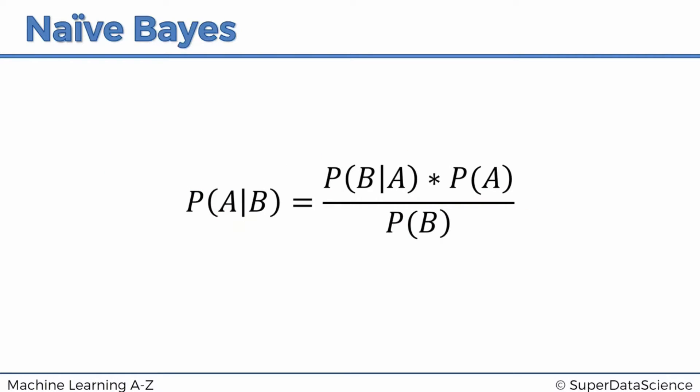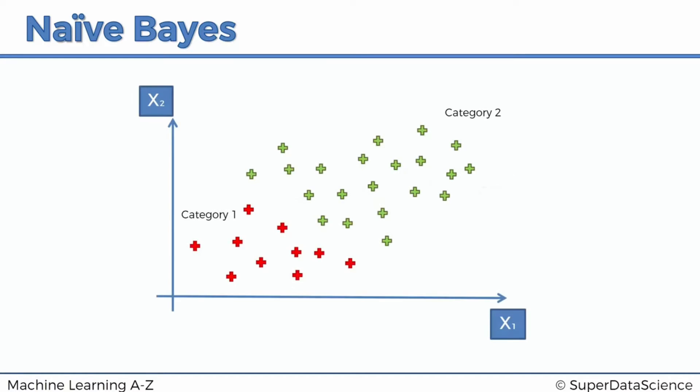Here we've got the Bayes theorem. This is something we talked about in the previous tutorial, so by now we should be quite comfortable with the concept. How are we going to apply it to create a machine learning algorithm? Let's have a look.